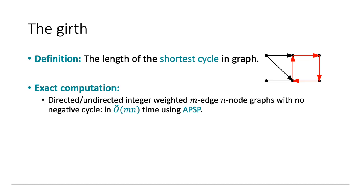First, let's focus on the girth. Computing girth can be done by computing all pairwise distances — that is, solving the all-pairs shortest paths problem — in order tilde of MN time, where M is the number of edges, N is the number of nodes, and the tilde means that we are ignoring sublinear factors.